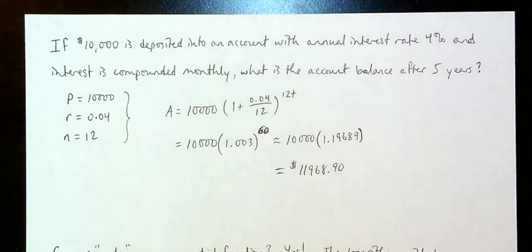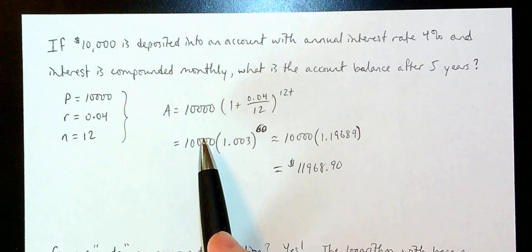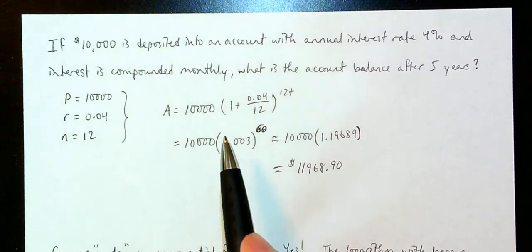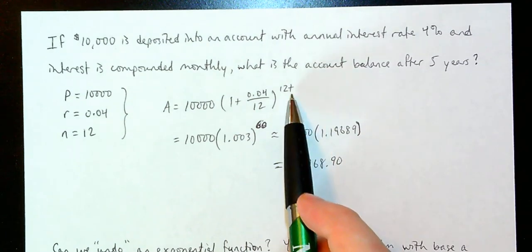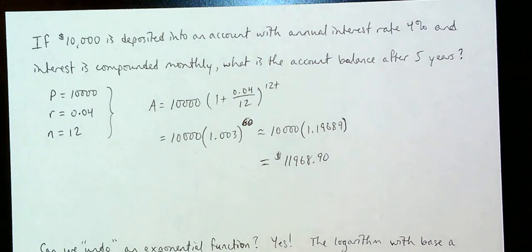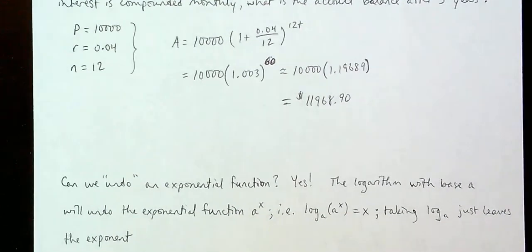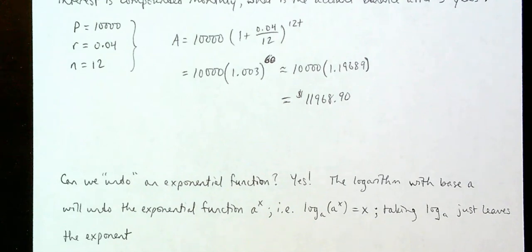But sometimes we want to know after how many years will our account balance hit some particular value — like $20,000, $30,000, or $50,000. So we want to solve for the T value — the variable that's now in the exponent, not in the base. How do we do that? We need to ask ourselves: is there a way to undo an exponential function? The answer is yes, and we do it with what's known as a logarithm.